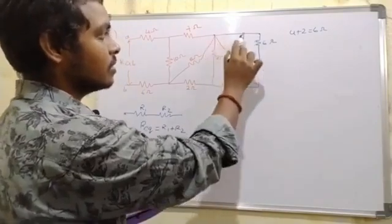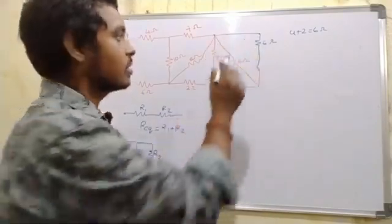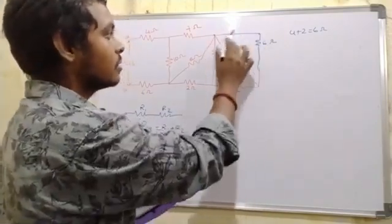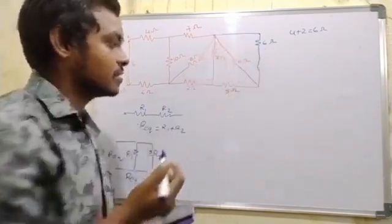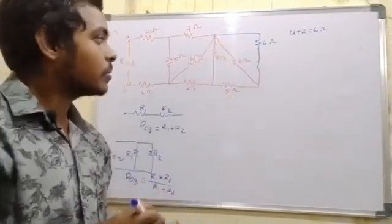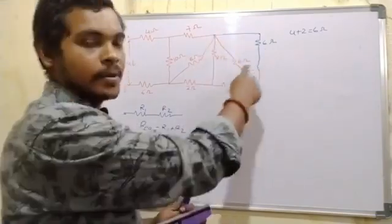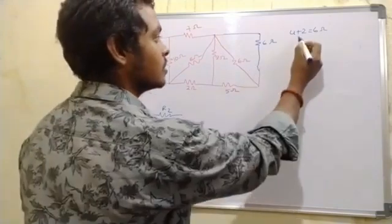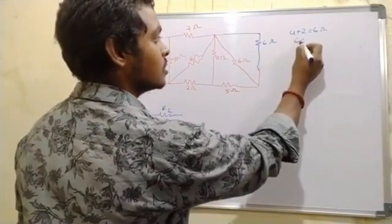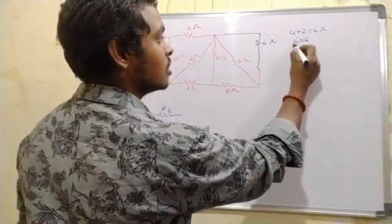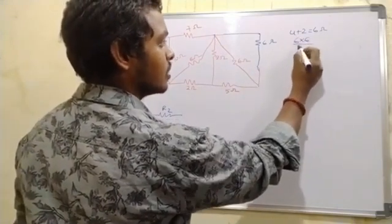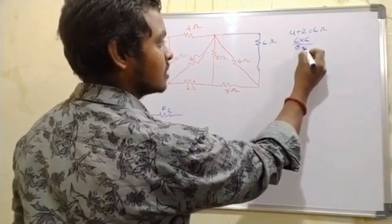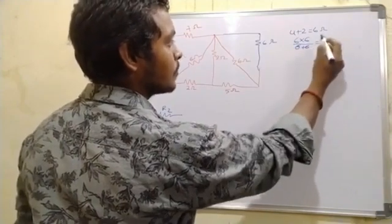Here we have no element and no resistance in this branch. We have a parallel combination here. This is parallel.